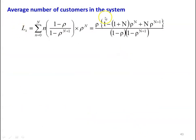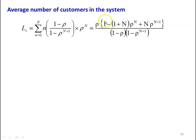The average number of customers in the system: Ls = Σ (N=0 to N) of N × [(1 − ρ) / (1 − ρ^(N+1))] × ρ^N. After calculation, this equals ρ × [1 − (1 + N)ρ^N + N·ρ^(N+1)] / [(1 − ρ)(1 − ρ^(N+1))].